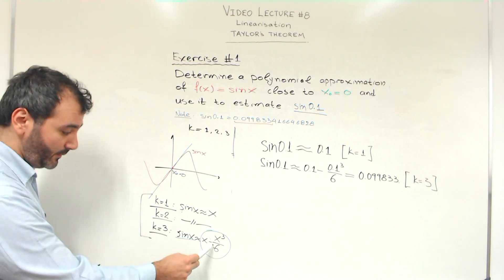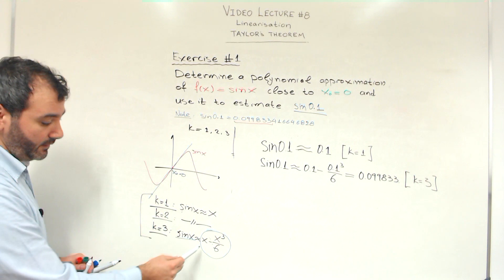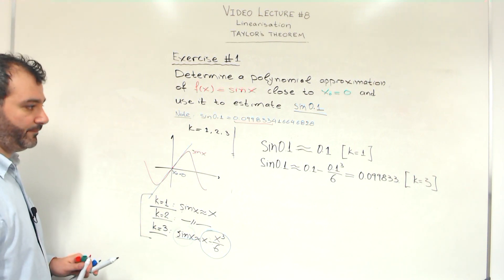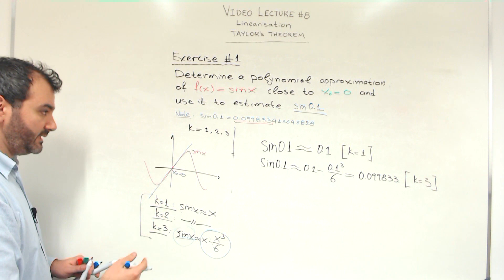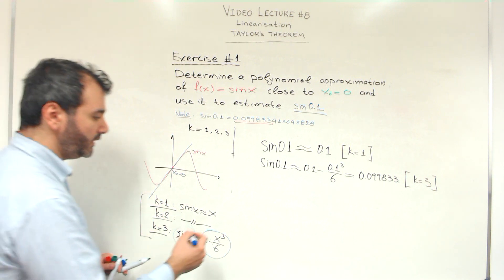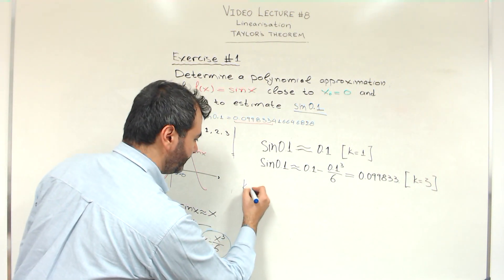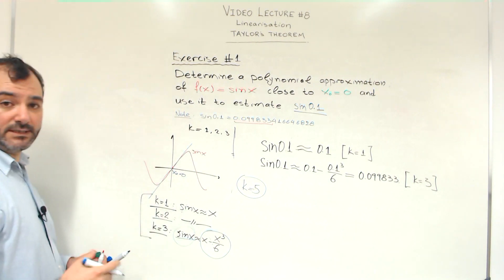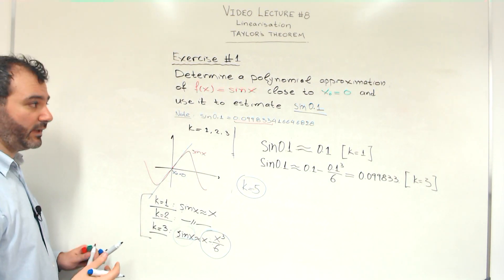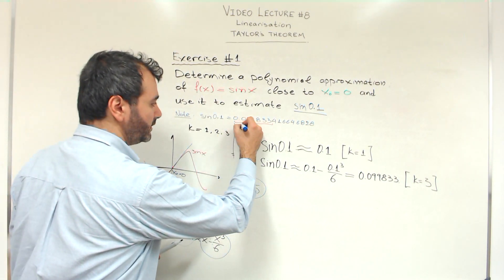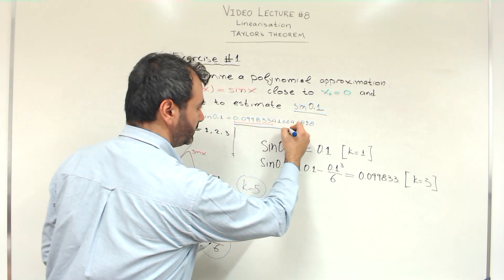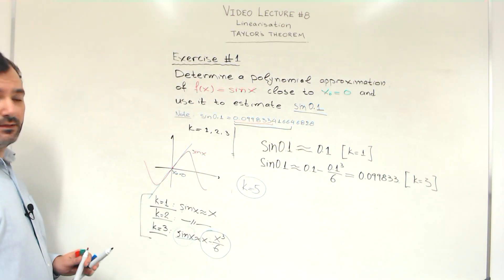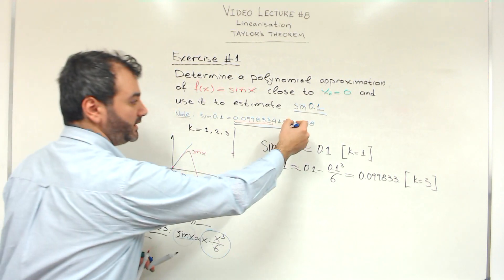This is a much simpler equation compared to sine of x. You can try as an exercise to use k equals 5 and see what happens — see how many digits you will be able to recover. You should be able to recover up to a specified number of decimal points.